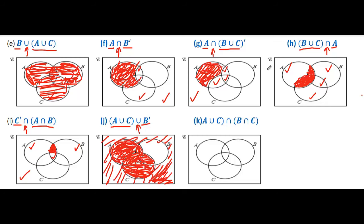This is called A union B union C whole complement. It means we take the bracket as a whole — that is A, B and C, all three regions. Complement means outside of all of these. The only region outside of all three regions is this one — so this is shaded.